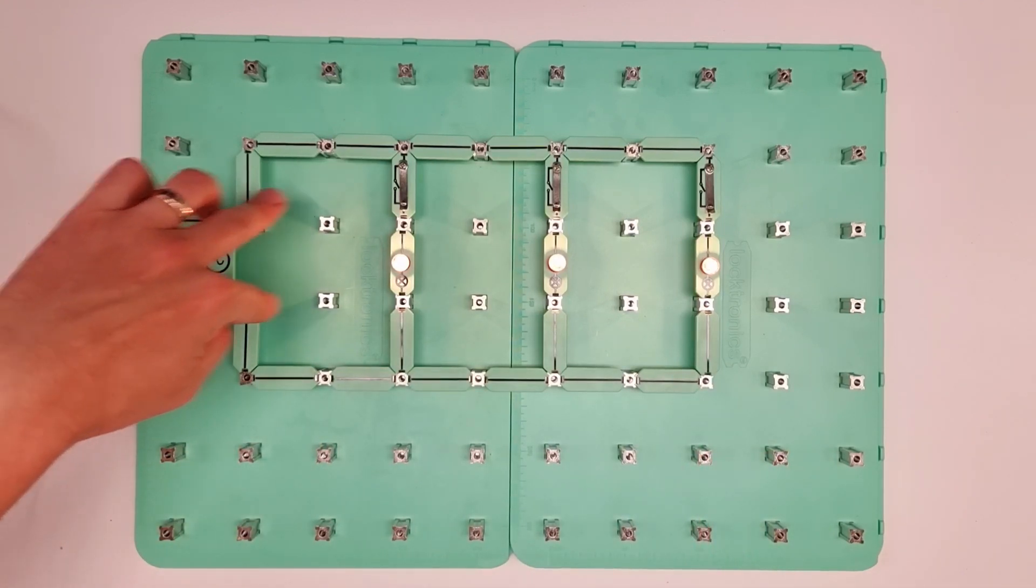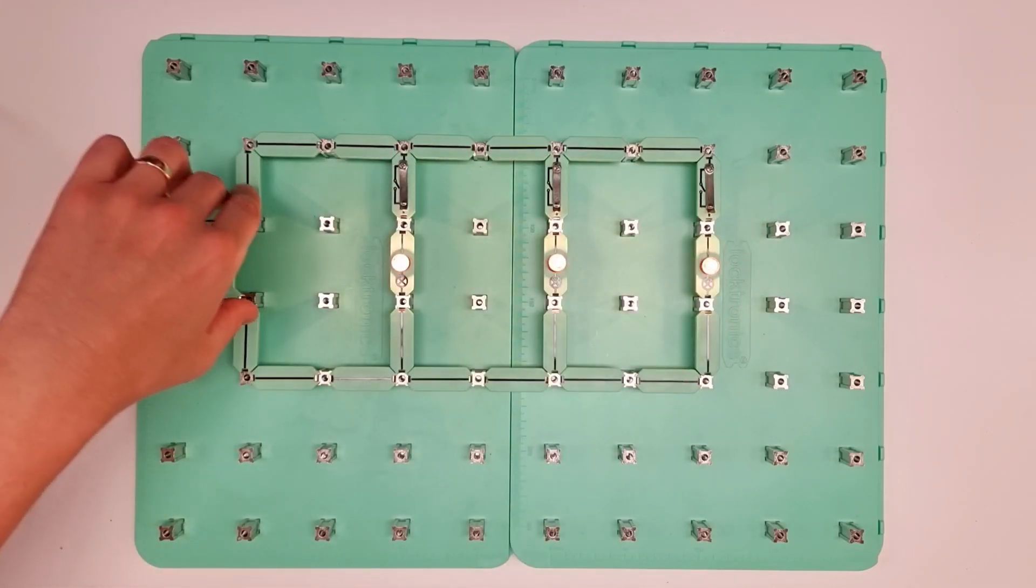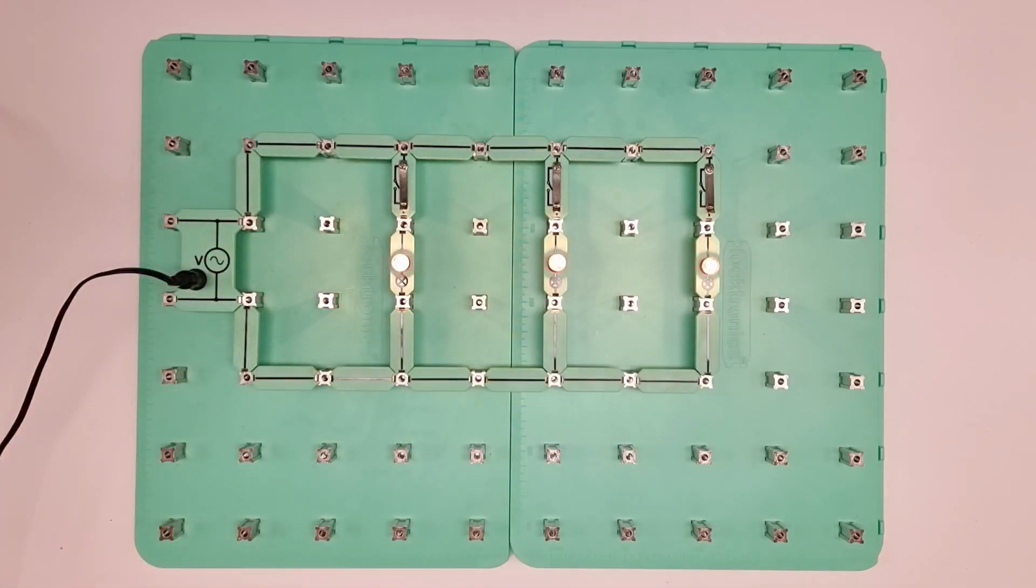because in a parallel circuit, remember, voltage stays the same across each point in the circuit and therefore each one of these is getting the full, in this case, 12 volts from the supply.